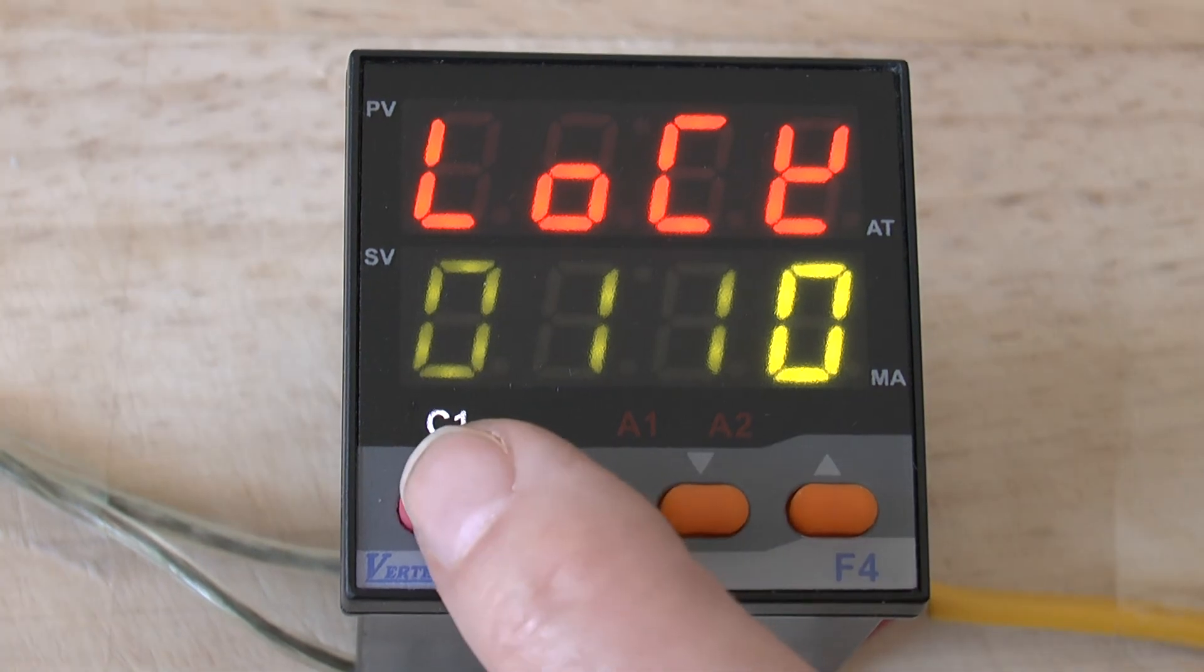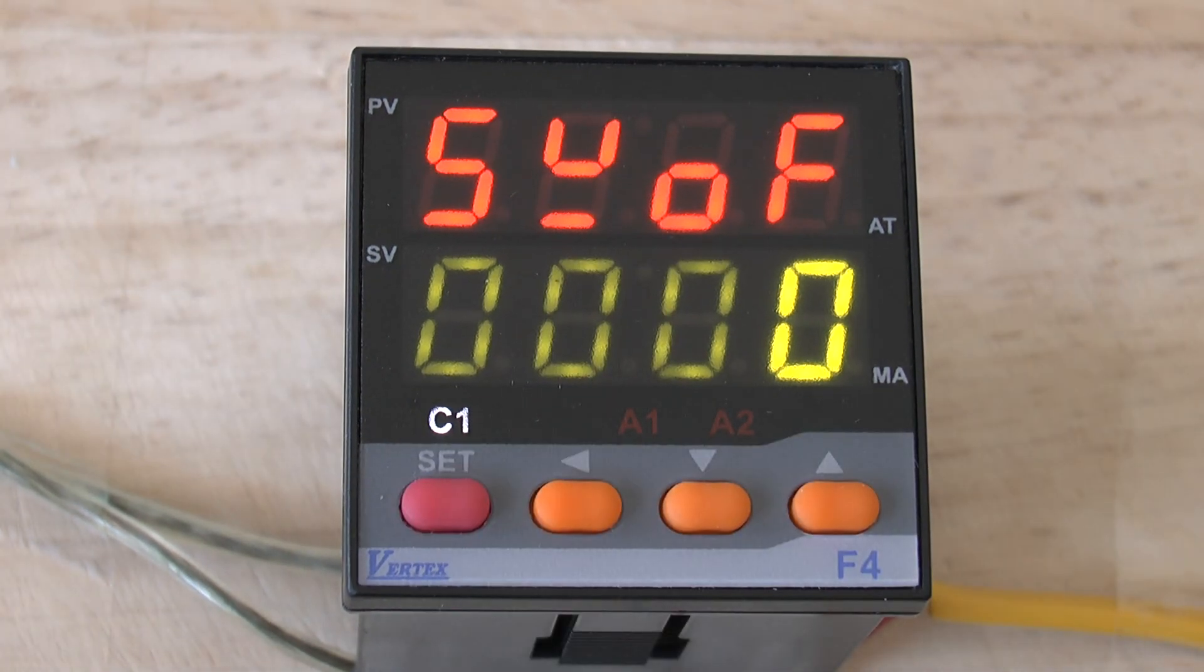The next parameter is the SVOF. That's a SETVALUE OFFSET. This works in a similar way to the parameter we spoke about earlier, the PVOF.